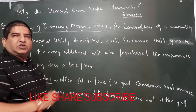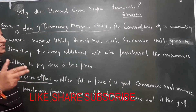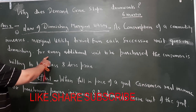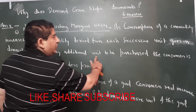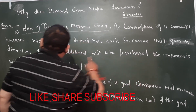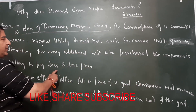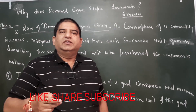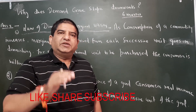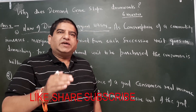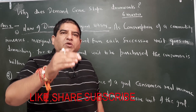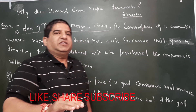As consumption of a commodity increases, marginal utility derived from each successive unit goes on diminishing. For every additional unit to be purchased, the consumer is willing to pay less and less price. When a consumer consumes more and more of a commodity, marginal utility diminishes. That is why the consumer buys more quantity at a lesser price.